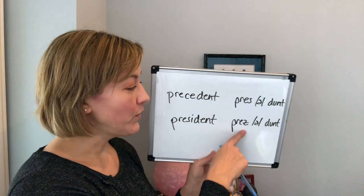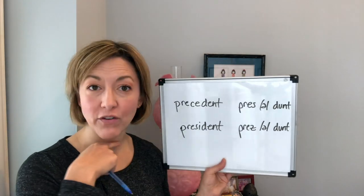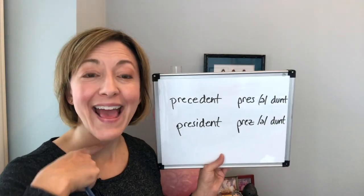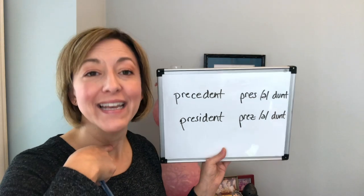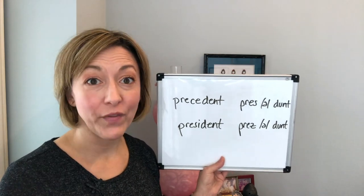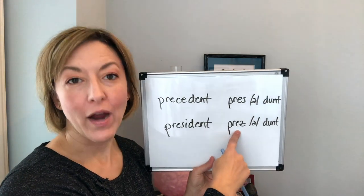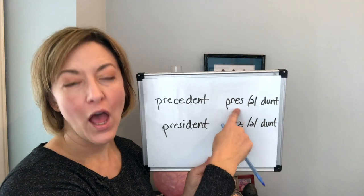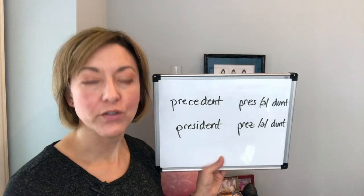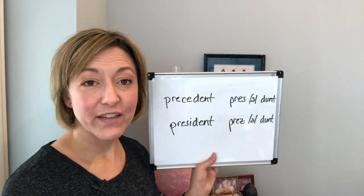If you're saying 'president,' instead of having the voice box off, you're going to turn the voice box on and it is going to move and vibrate. That's the only difference. So we have 'press' and 'prezz' — 'press, prezz.' The vowel sounds a little bit stronger because of that voicing; that E is going to be a tiny bit longer.